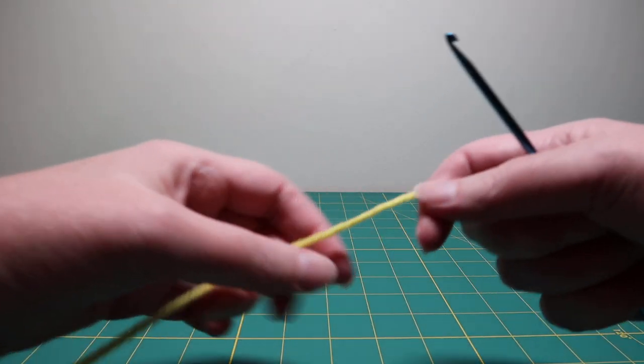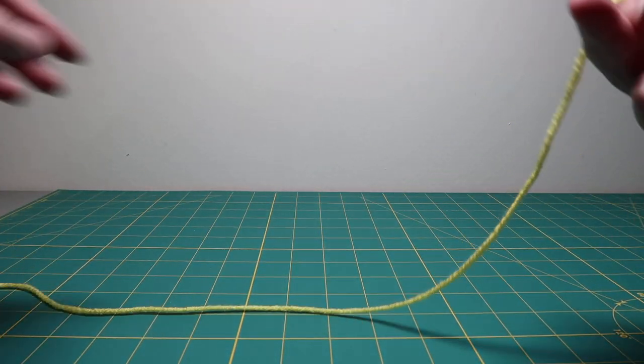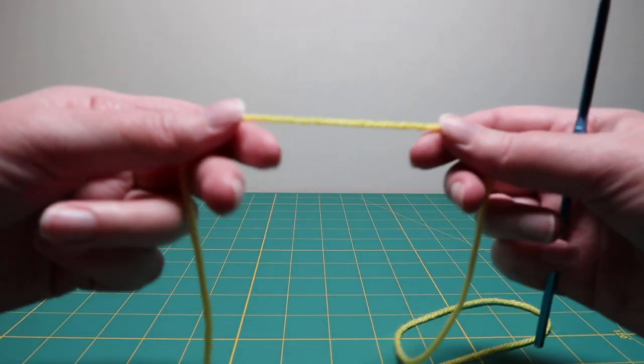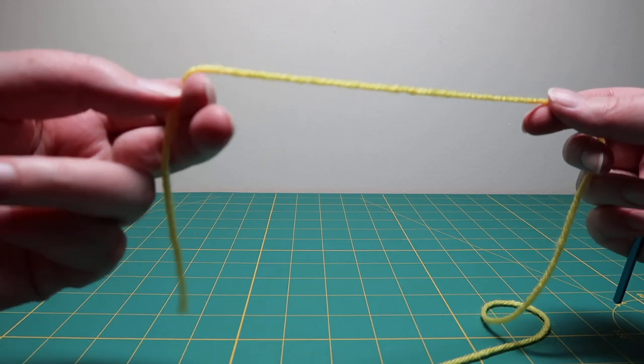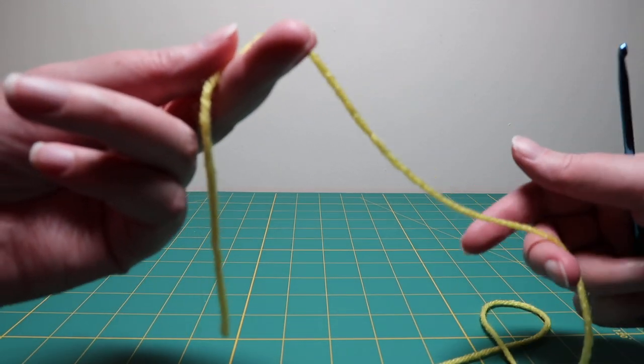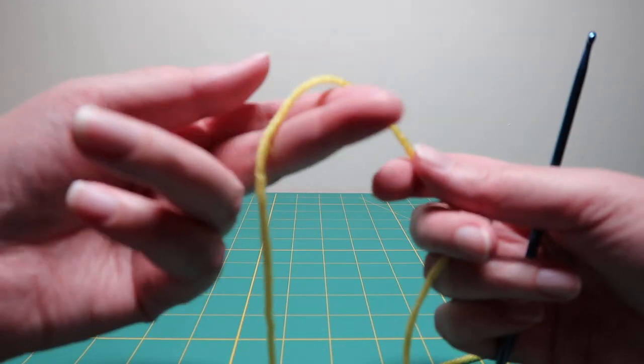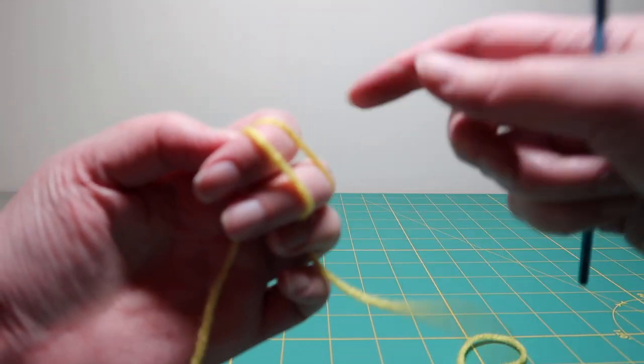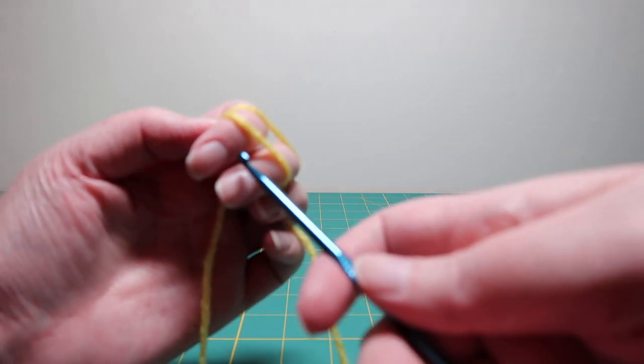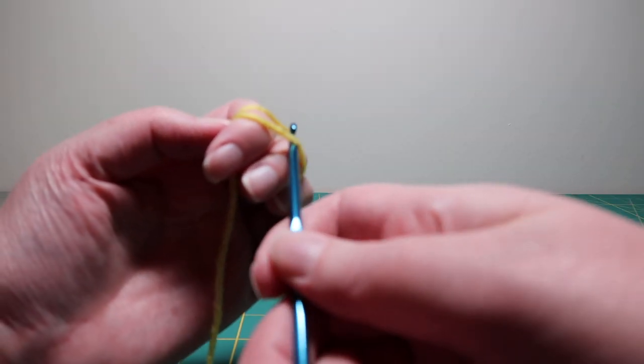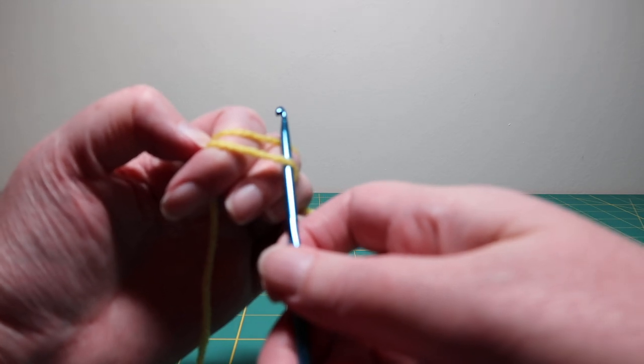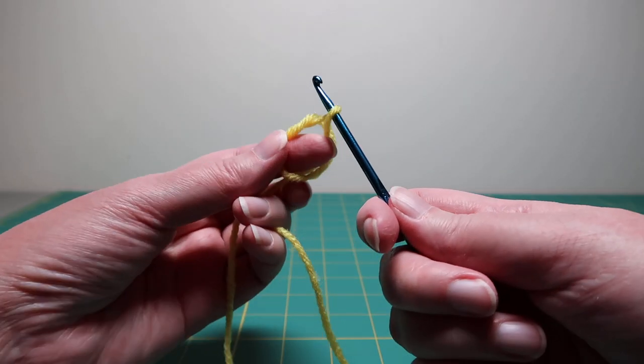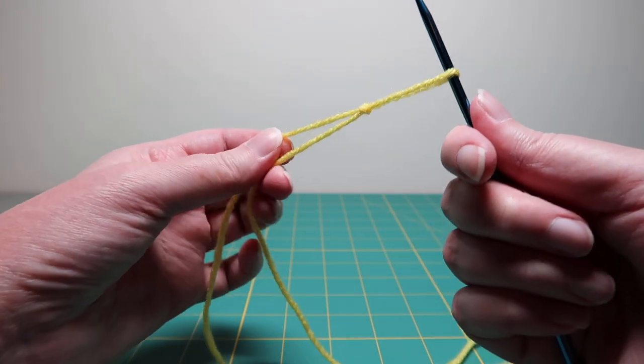So a chain stitch is the first stitch that you'll use in most projects unless you're working in the round. So you take your yarn, hold it around those two fingers, wrap it around, bring it to the top, stick the hook through that first strand, and pull the second strand through, and then pull on both ends of the yarn.